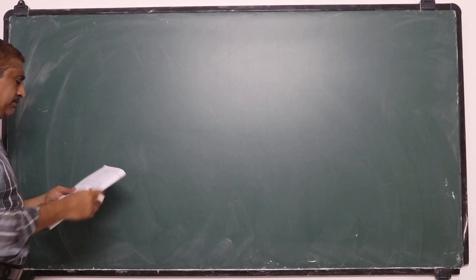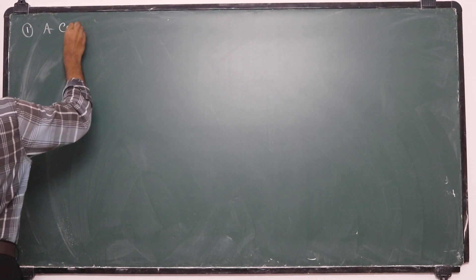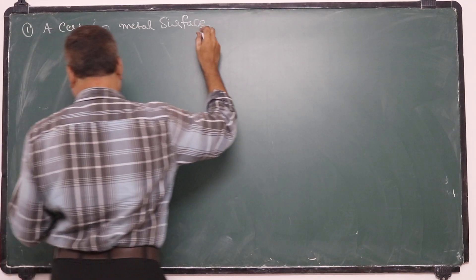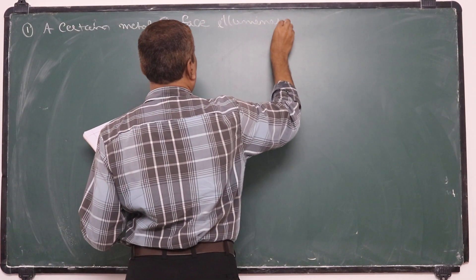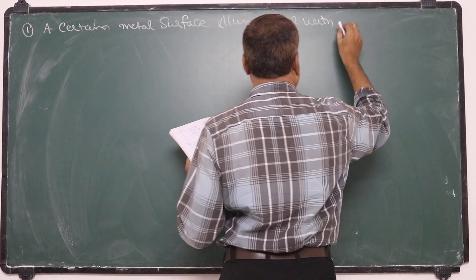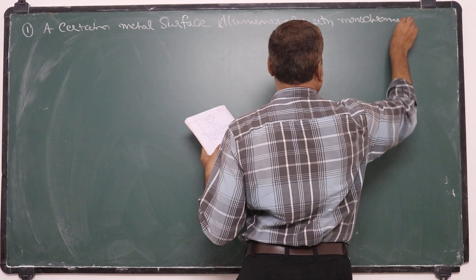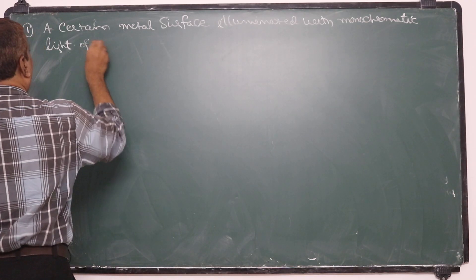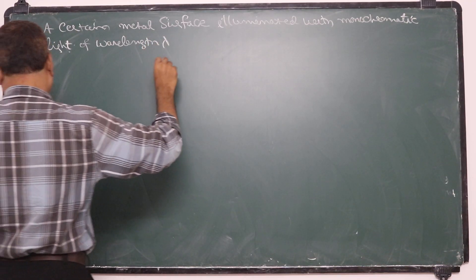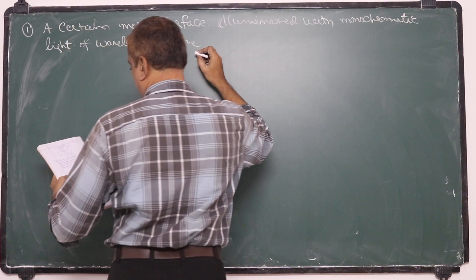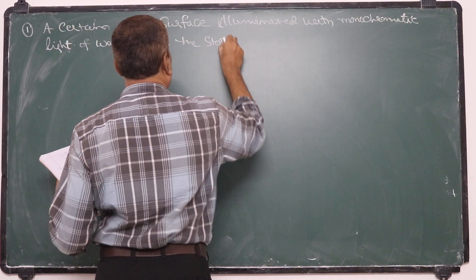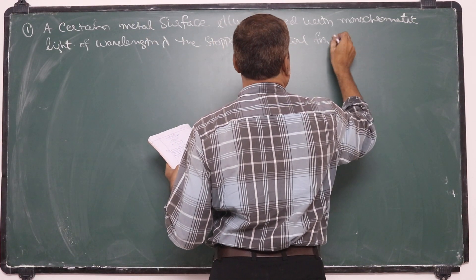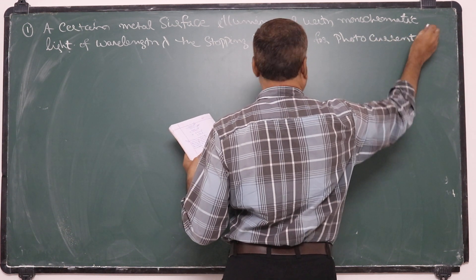The first problem: a certain metal surface is illuminated with monochromatic light of wavelength lambda. The stopping potential for the photo current is 3V₀.